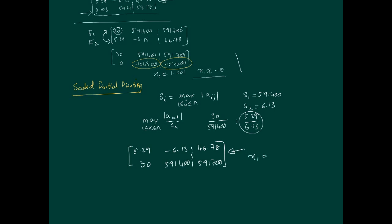We will get the correct answer. These are two pivoting strategies that can be used in combination with Gaussian elimination: scaled partial pivoting and partial pivoting. And that's it for pivoting strategies.